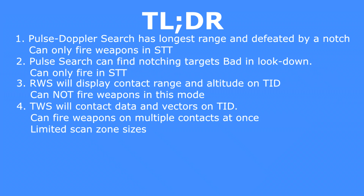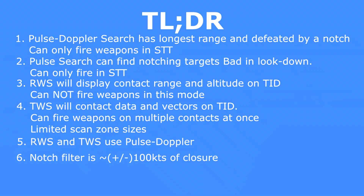Three: Range While Search will display targets on the TID and display their range and altitude — you cannot engage targets in RWS. Four: TWS will display target data and their relative vectors on the TID, as well as allow you to engage multiple targets at the same time — the scan zone is limited to only two scan sizes. Five: RWS and TWS both use Pulse Doppler search. Six: The notch filter is somewhere around plus or minus 100 knots of closure.